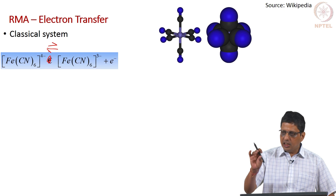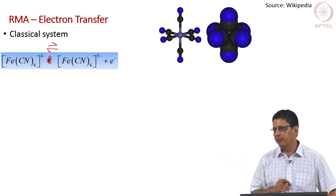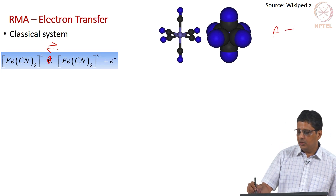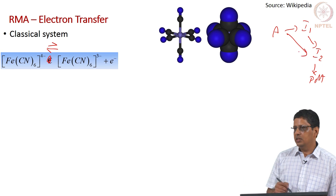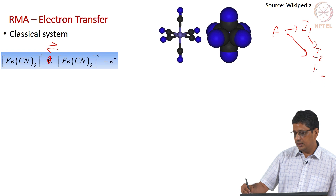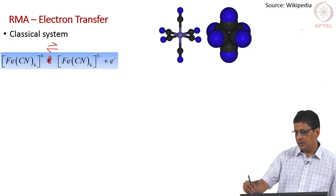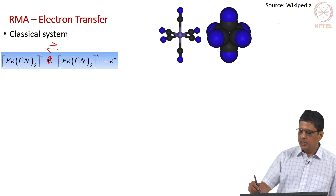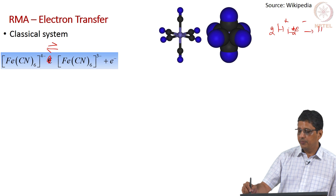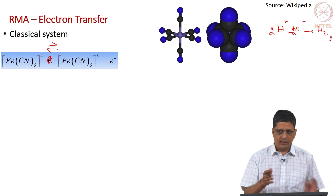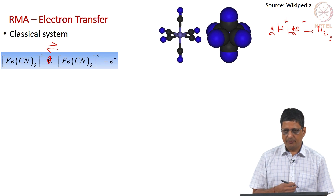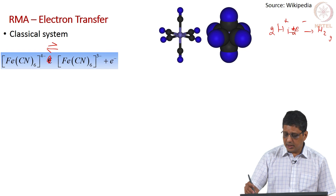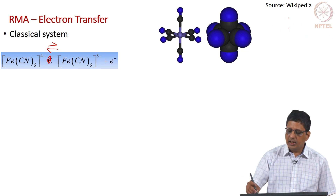Or A goes to an intermediate, that intermediate goes to another intermediate and then it goes to the product — a reversible reaction. A can also directly go to the product; that is a possibility. Many possibilities exist. Many of the reactions of importance do not happen in one step. For example, 2 hydrogen ions take 2 electrons and form a hydrogen molecule and go out as a gas bubble — it does not happen in one step, it happens through multiple steps. Similarly, oxygen evolution reaction and oxygen reduction reaction do not normally happen in one step.